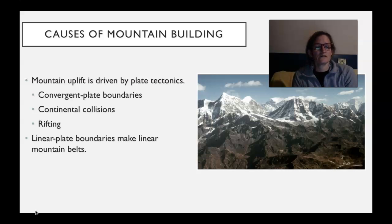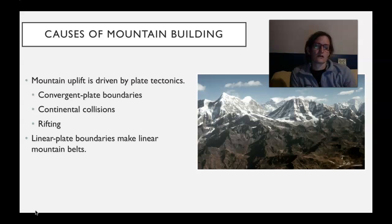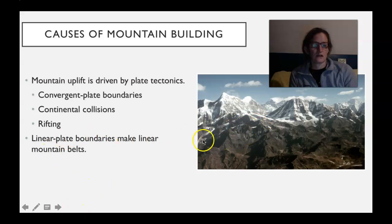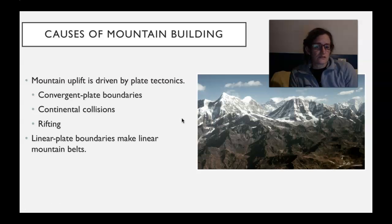Mountains can get really big — jagged, steep slopes, lots of relief — this is a young mountain chain. Mostly the mountains are going to be formed through convergence, so convergent plate boundaries and continental collision.